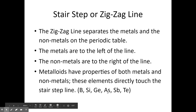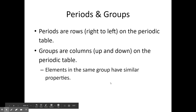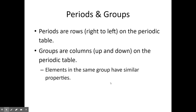The metalloids are: boron, silicon, germanium, astatine, antimony, and tellurium. Periods are the rows running left to right — there are seven of them. Groups are the columns running up and down — there are 18 of them. The law is that elements in the same group will have similar chemical and physical properties.